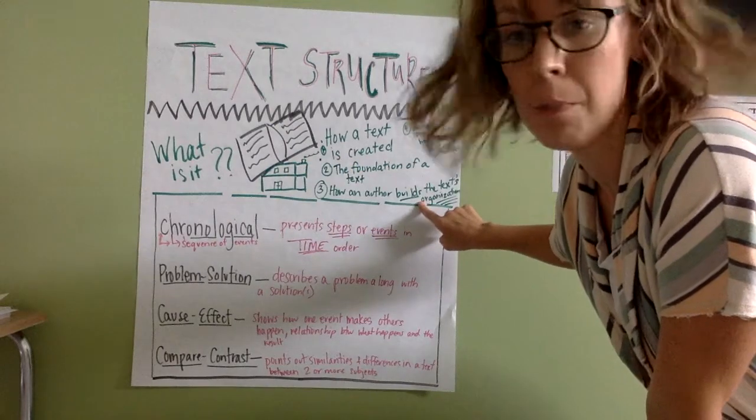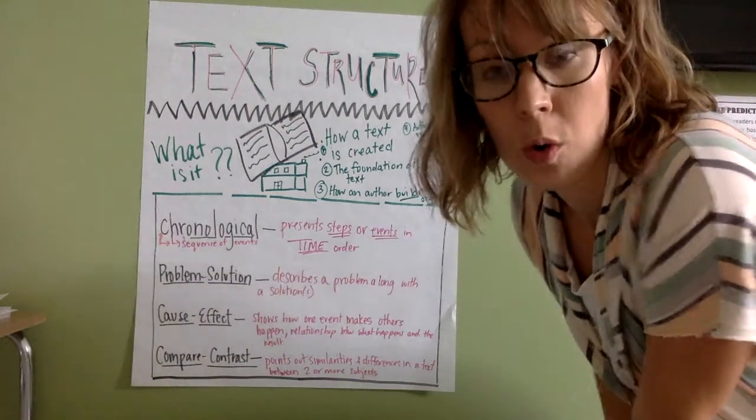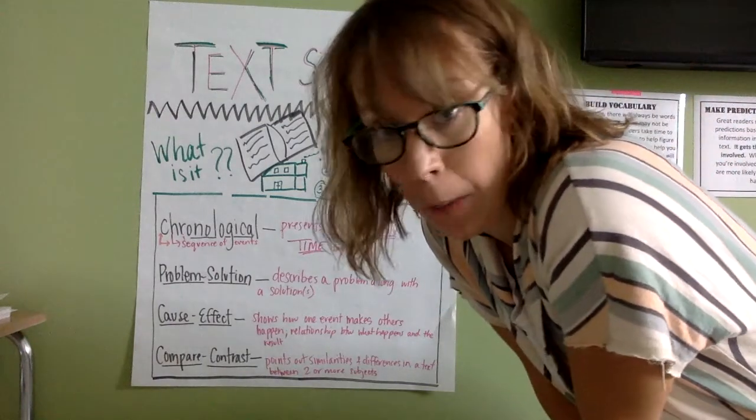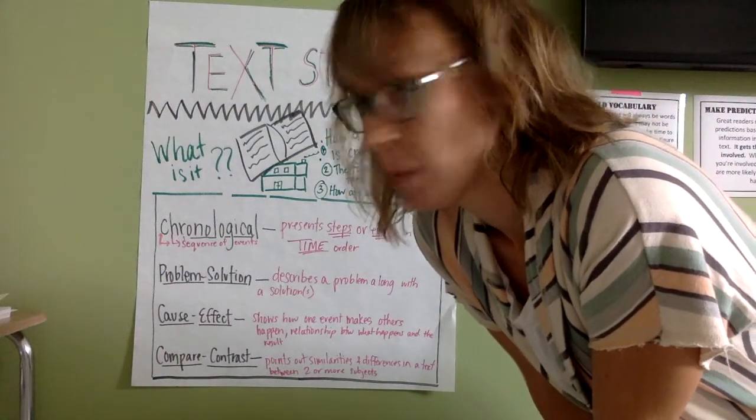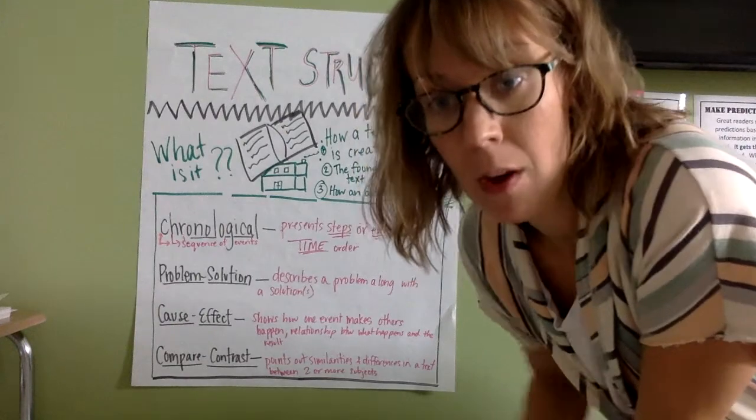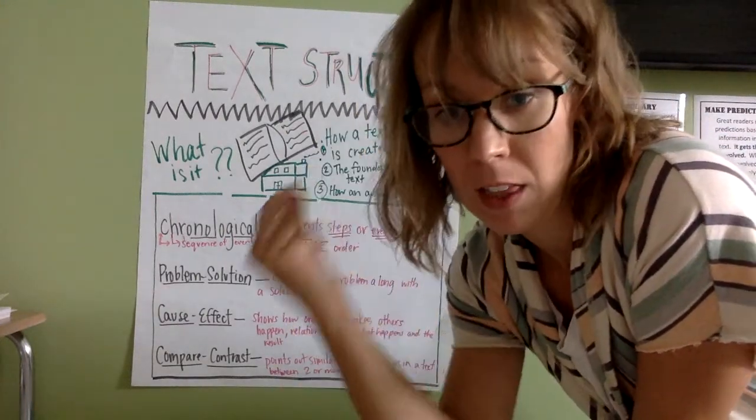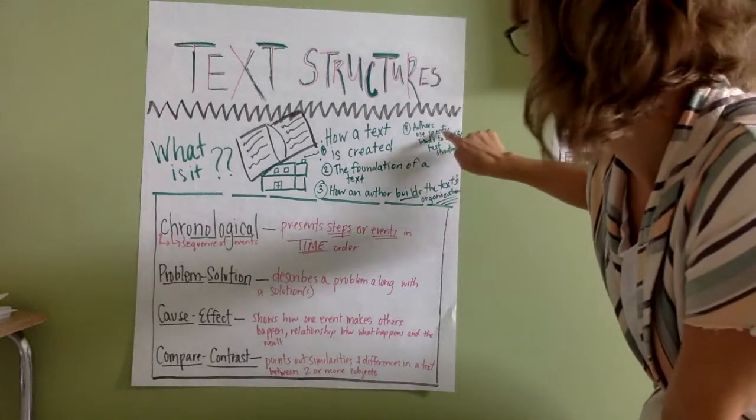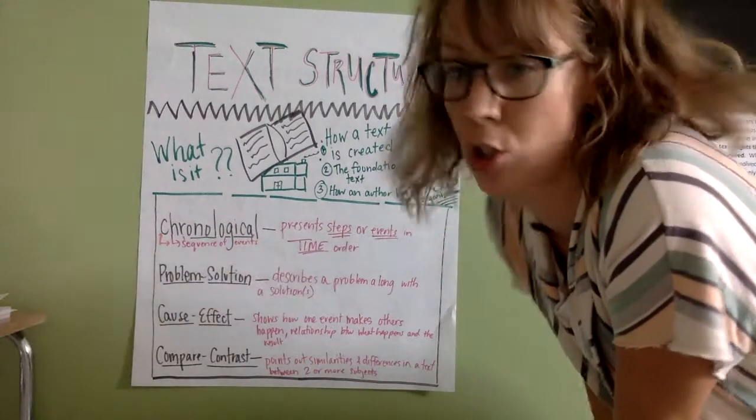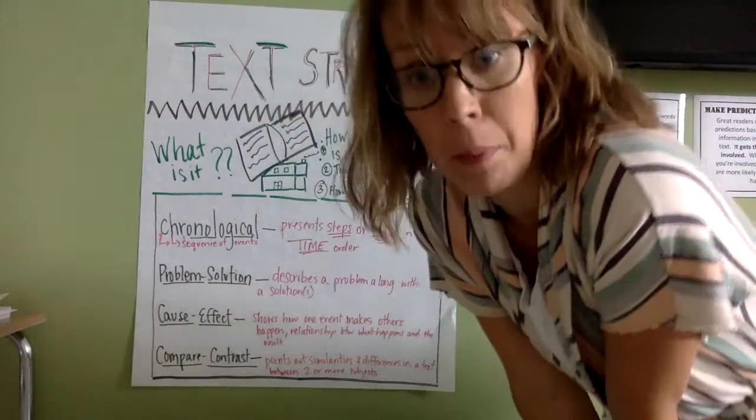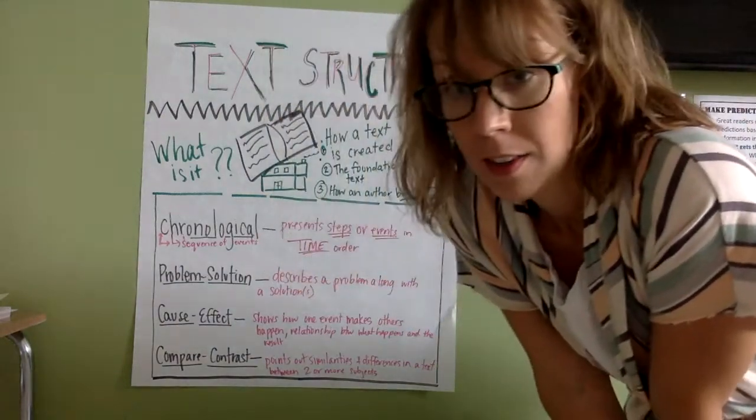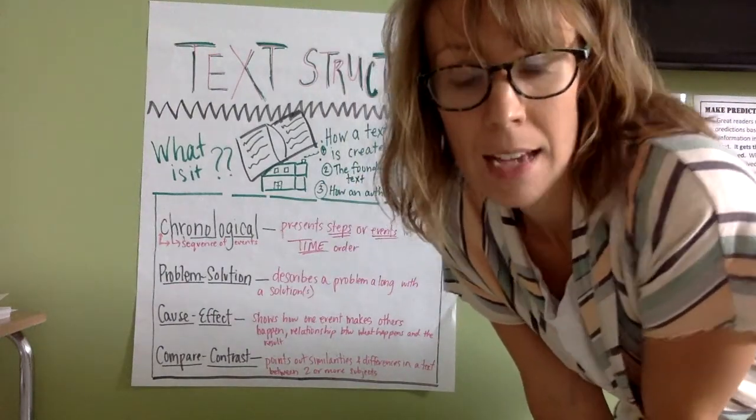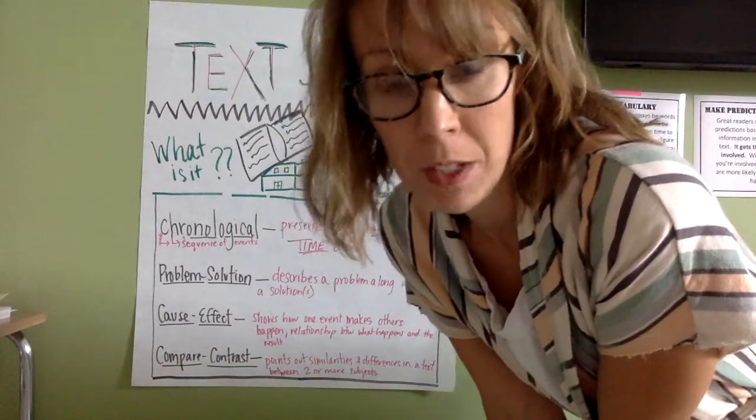It is how an author builds the text organization. So are they going to write it in a certain way? Yes. If you were the author and you had to write about bees or penguins or the earth's atmosphere, you would have to think about how am I going to write and organize my thoughts so someone understands it deeper. Then the author uses specific words to identify the text structure. So they use words that say problem or this is the effect of this or the time of this is 1981. All of those things are clues that the author has given us for us to understand the structure of how they are writing.